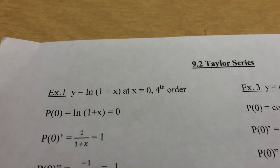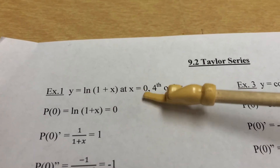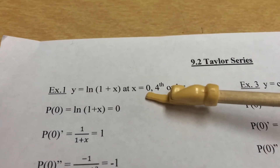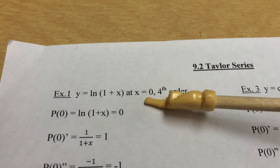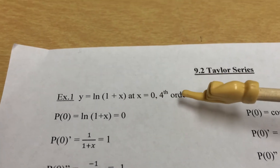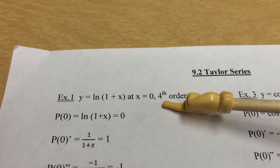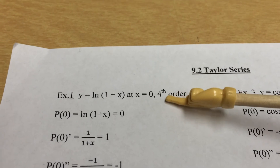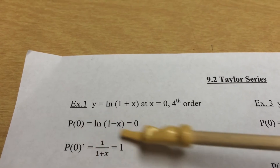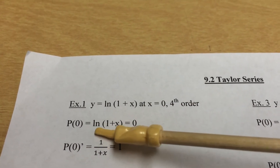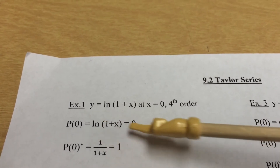Now let's go into the classwork. Given ln(1+x) at x equals zero, the x equals zero is called the center. All the problems in this homework have center at x equals zero, and they'll ask for some order — fourth order, fifth order, seventh order, etc. The original function starts with substituting zero: ln(0+0) equals zero. Then we start taking derivatives.